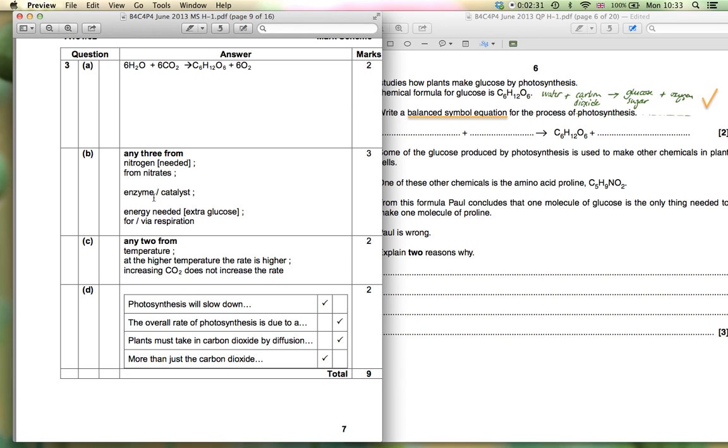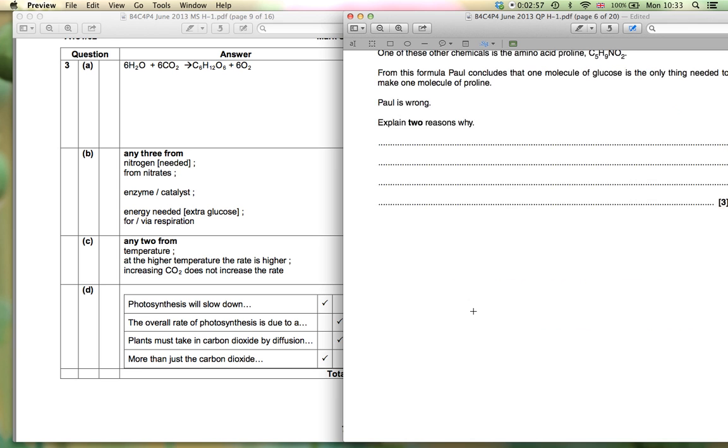If you explain that you need enzymes to build amino acids, so proline is built using enzymes, that will also give you a mark because they have to be constructed and there's energy needed to do that building. So extra glucose would be needed to provide energy for the enzymes to build the proline. All of those could gain a mark and there are three available in total. The next part of the question is about this graph.